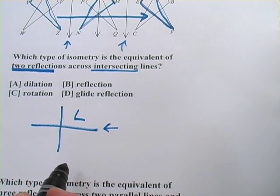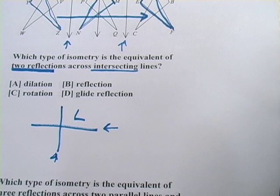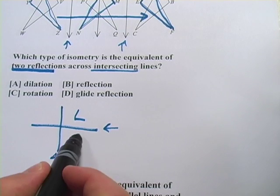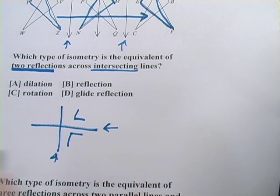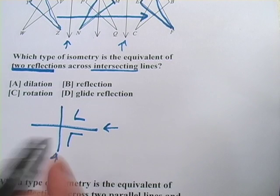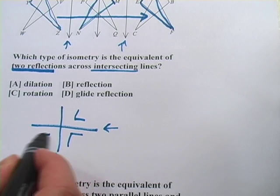And we want to do two reflections across intersecting lines. So I'm going to reflect it across this line first, and then I'm going to reflect it across this line. When I reflect it across this line, I get like that, mirror image. And then when I reflect it across this line, I get a mirror image of that.